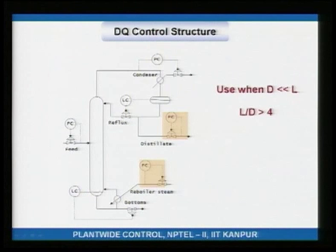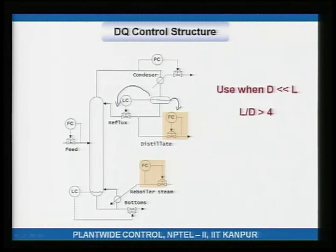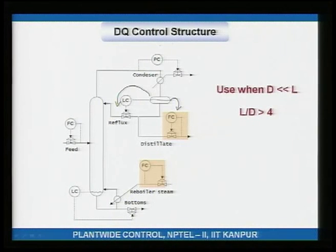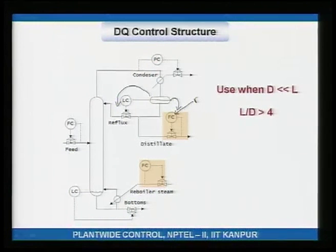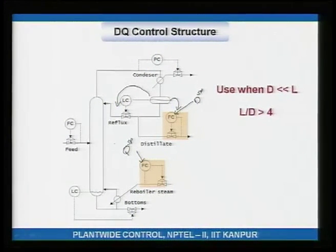In another orientation, the level controller uses reflux to control the reflux drum level instead of distillate. The bottoms level control is as before, and pressure control again uses the cooling water condenser. The two set points left for the operator are D and Q — hence this is called the DQ structure.